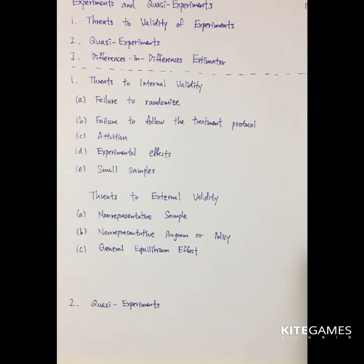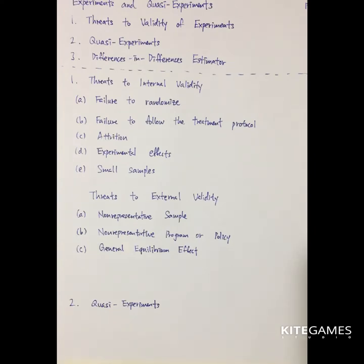Finally, there is the general equilibrium effect. You need to consider secondary effects. For example, if a vocational training program gives some workers better education and higher productivity, more workers will pursue it, wages increase, but it also increases the cost to firms. Eventually, firms may replace workers with robots, demand for workers decreases, and wages are reduced. This secondary effect means your experiment may not be significant enough on its own.